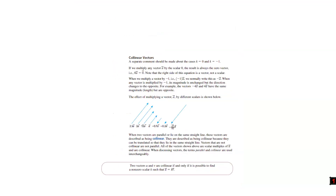Now let's talk about collinear vectors — really cool stuff. If we multiply a vector a by scalar 0, the result is always the zero vector. We also have the zero vector. The zero vector has zero magnitude, but its direction is saved from vector a.